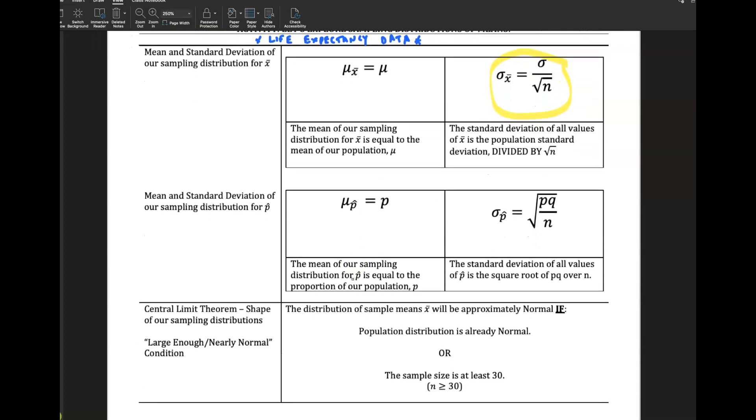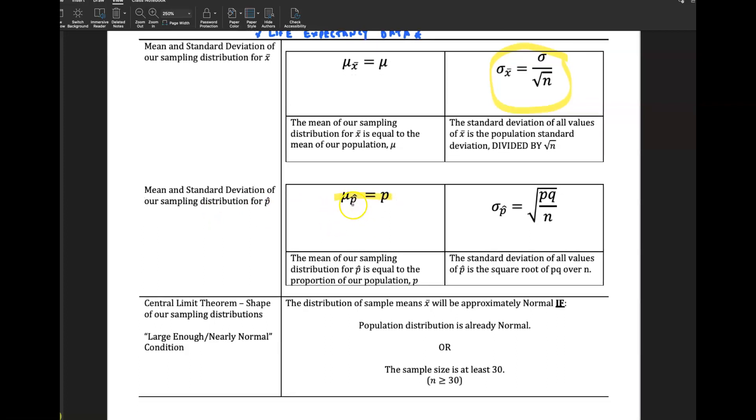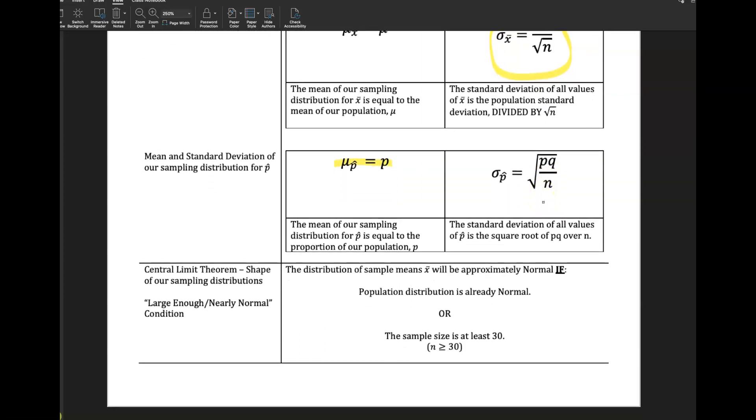Later on, we'll look at proportions, sampling distributions for proportions. And what we know is the distribution, sampling distribution for proportion, mu of P hat equals P. And then there is also, here's the standard deviation for all values for the distribution here. And so that's what we're looking at. Look at that notation there.